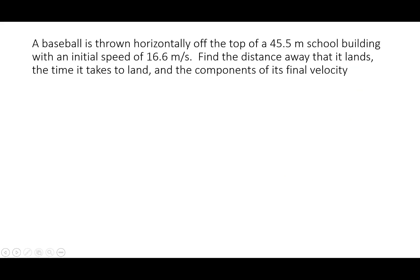Let's do a practice problem. A baseball is thrown horizontally off the top of a 45.5-meter school building with an initial speed of 16.6 meters per second. Find the distance away that it lands, the time it takes to land, and the components of its final velocity. I'm going to sketch out a little diagram. Our object is launched with a horizontal initial velocity u, and it's going to take a parabolic arc to reach the ground. When it hits the ground, it's going to have some downward component vy and some rightward component vx. We can also think about the acceleration — that's straight down, negative 9.81 meters per second squared.